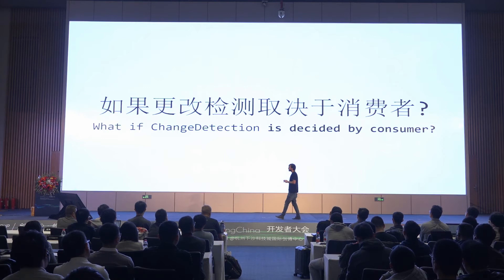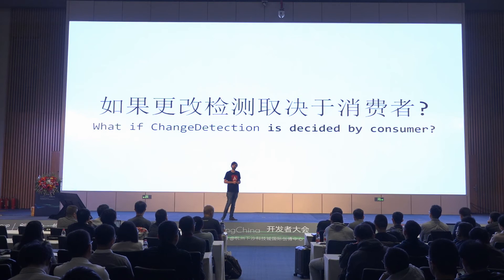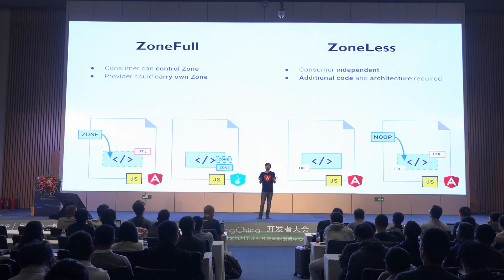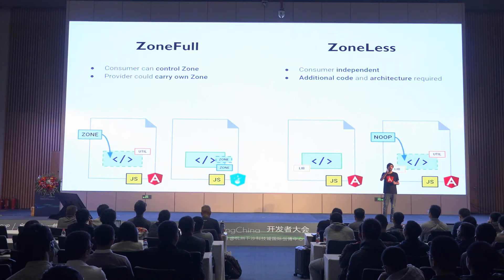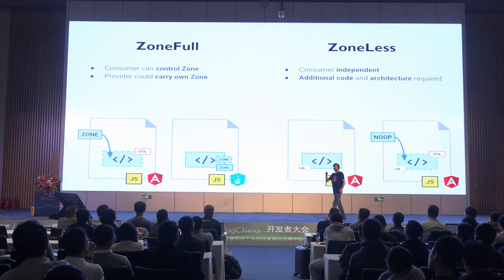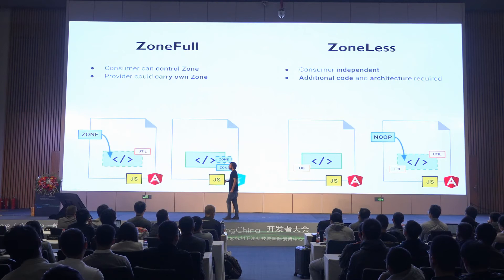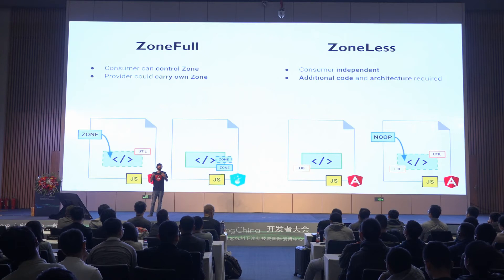What if change detection is decided by your consumer — the consumer says, I decide if you run zone-less or zone-full? We have different versions. On one hand we can ship web components zone-full in two ways: include zone.js directly in the bundle, or inject the zone from the parent consumer application. If we go zone-less, we also have two options: don't ship zone at all, or inject and control it from the parent.